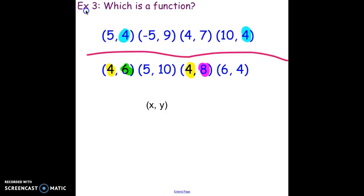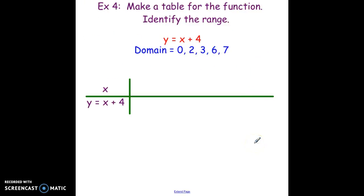Example 4: We're going to make a table for the function and identify the range. My domain is 0, 2, 3, 6, 7, so I'm going to put that at the top for my input. My output or my range is going to be what happens when I use my function y = x + 4. Each one of my domain values, each one of my x's, gets put in for the x and I'm going to find the output.